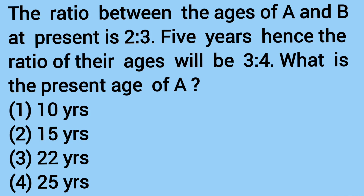The ratio between the age of A and B at present is 2 is to 3. 5 years hence, the ratio of their age will be 3 is to 4. What is the present age of A?